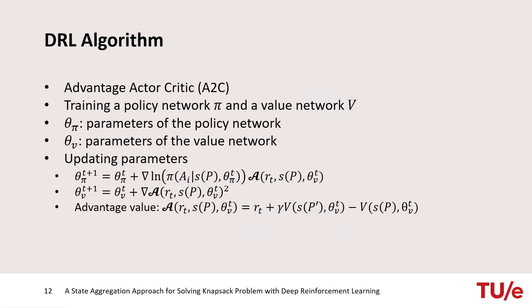Advantage Actor-Critic is the algorithm that we selected to solve this problem. Basically, in advantage actor-critic, two neural networks are trained, one for policy and the other for value. And the parameters of these two neural networks are updated using the formula that you can see in this slide. You can also see the formula of advantage function, which is the expected value of temporal difference.